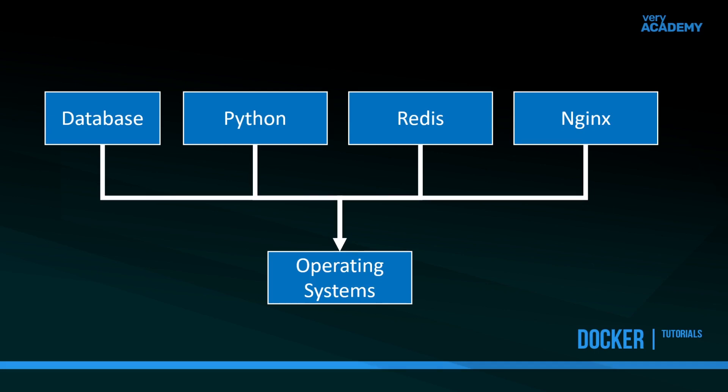If you've done any development, you'll know that building a Django application, you're potentially going to need a database. So you go ahead and install a database onto your operating system — maybe a MySQL or Postgres database. And then to run with Django, you're going to need Python, so maybe on a Windows machine you download the latest version of Python. And then you find out that your application needs a message broker, so you install Redis or RabbitMQ. And then you want to test your application before deploying it, so you install NGINX or Apache.